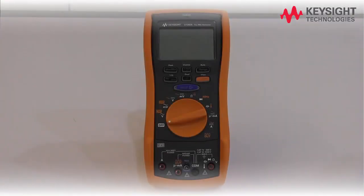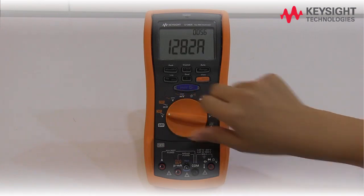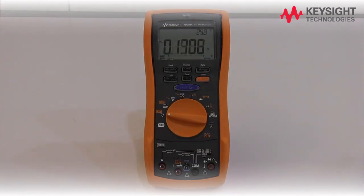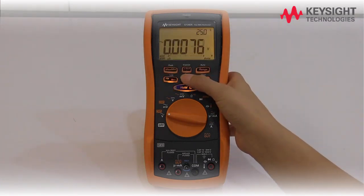To power on the multimeter, turn the rotary switch from off to any other position. For optimum viewing experience under low light condition, press the backlight key.